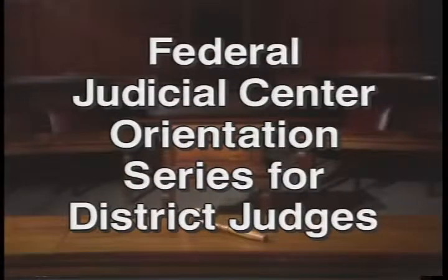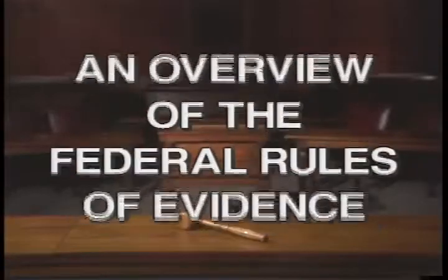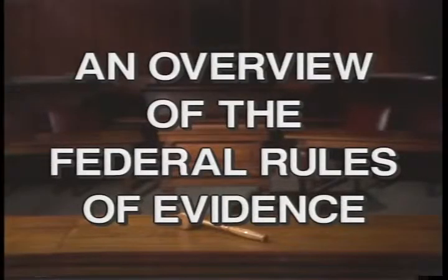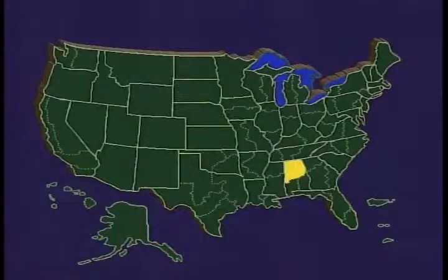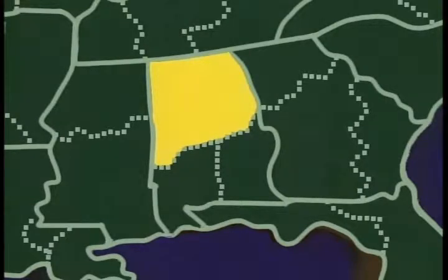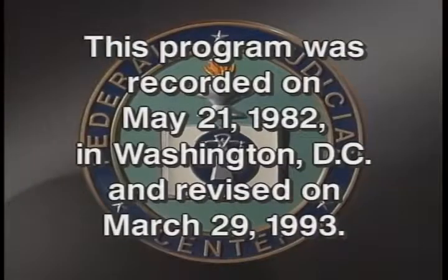Federal Judicial Center Orientation Series for District Judges: an overview of the Federal Rules of Evidence, with the Honorable James H. Hancock. Judge Hancock was appointed as a United States District Judge for the Northern District of Alabama in 1973. He is a member of the Judicial Council of the Eleventh Circuit. Congratulations on your appointment to the Federal Bench and welcome to the Federal Judiciary. You are about to watch a lecture on the Federal Rules of Evidence that I gave to a group of newly appointed district judges several years ago.